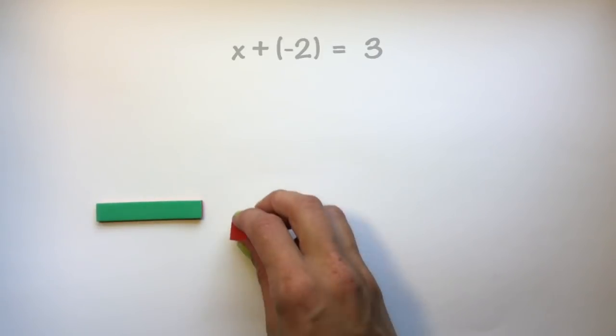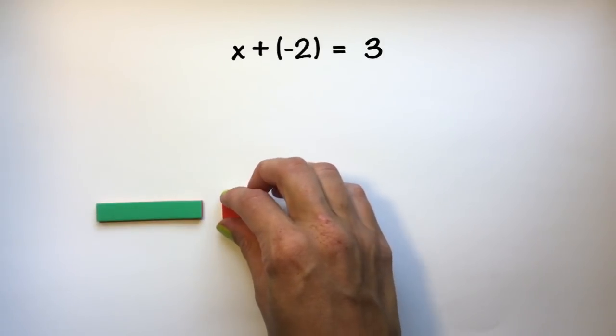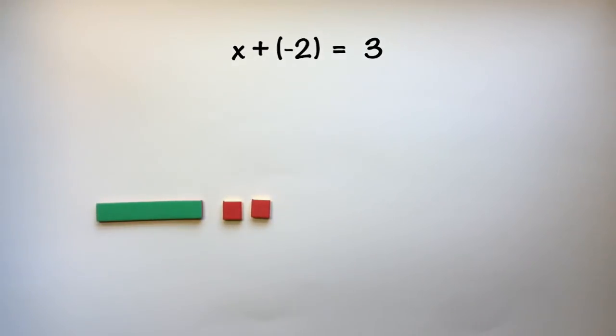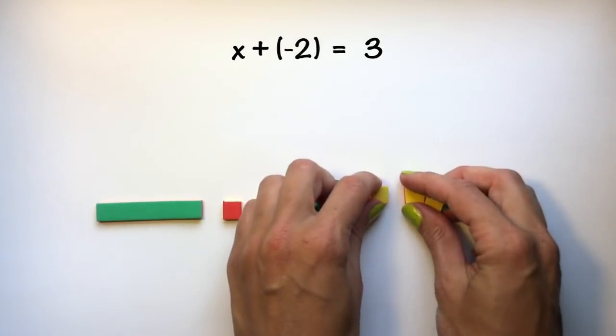Let's look at another example. The equation x - 2, and remember minus 2 we could represent as plus negative 2, is equal to 3.